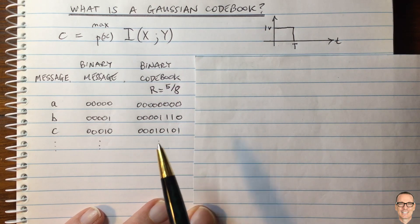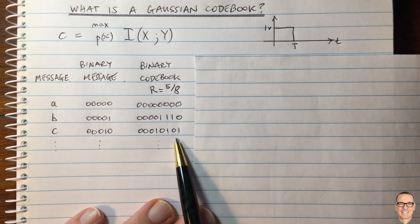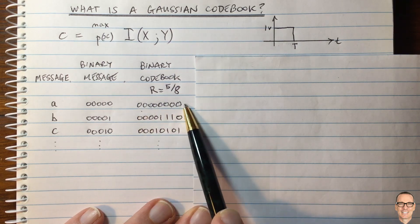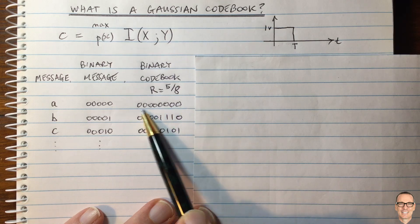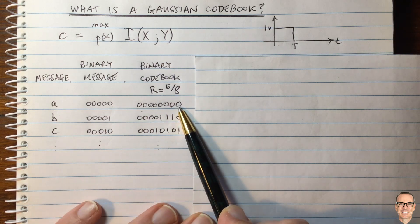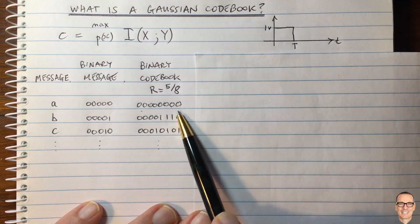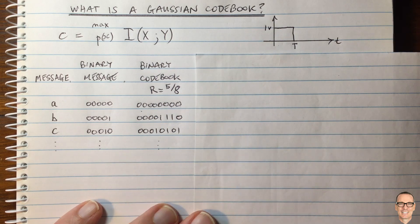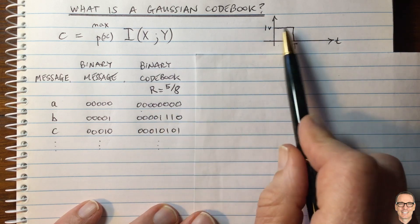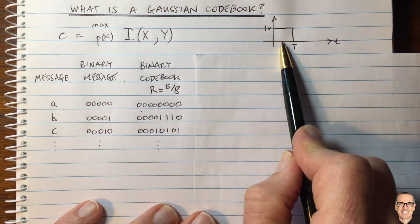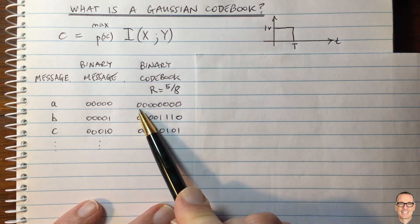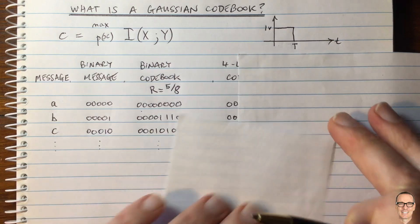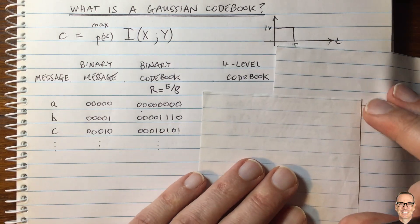Now we ask ourselves: is this the best codebook we could have? Could we use fewer time periods? This requires eight time periods — could we use fewer and still get our message through with the same overall reliability? What we could do instead of just sending this signal or zero is have four levels, perhaps.